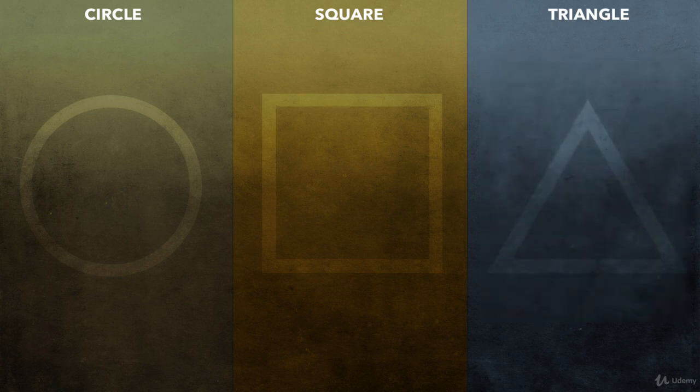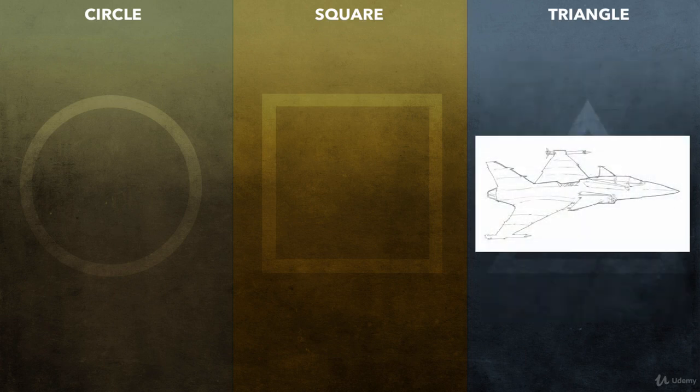For our triangular vehicle, let's take a look at this fighter jet. Everything about this machine screams fast, aggressive, and dangerous. Triangular shapes imply movement and sharpness, and this machine really communicates both.